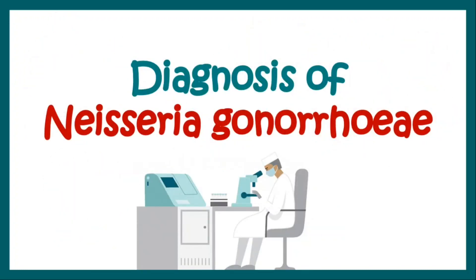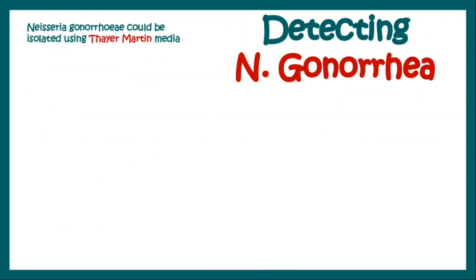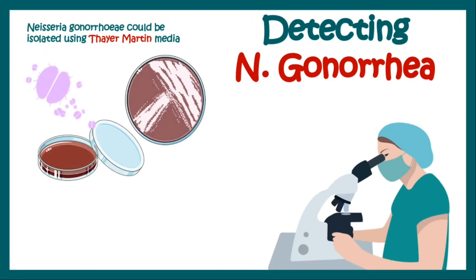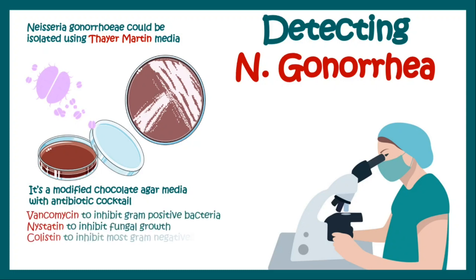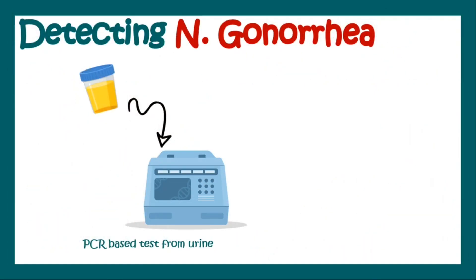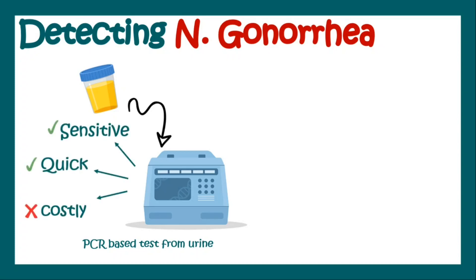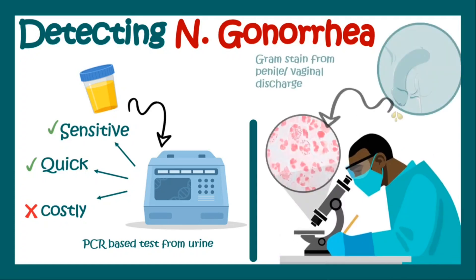In a laboratory setting, Neisseria gonorrhoeae can be isolated using Thayer-Martin media, which is a modification of chocolate agar containing an antibiotic cocktail. The cocktail includes vancomycin to inhibit gram-positive bacteria, nystatin to inhibit fungal growth, and colistin to inhibit most gram-negative bacteria other than Neisseria. PCR-based tests from urine are also available and are sensitive, quick, and cheap — in contrast to gram staining from penile or vaginal discharge, which is non-specific and not very efficient.